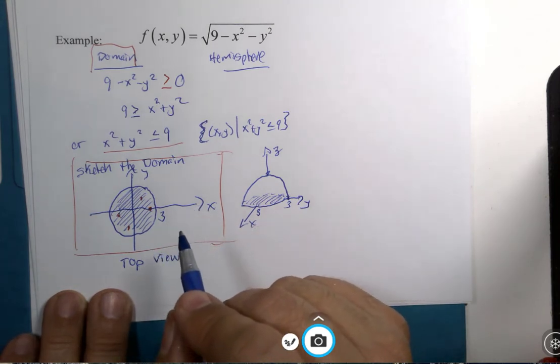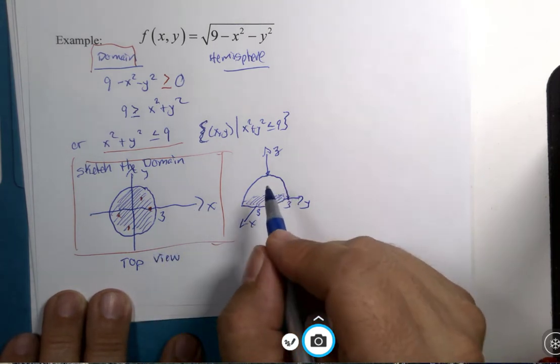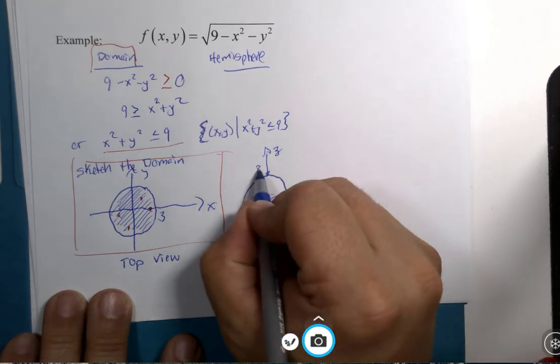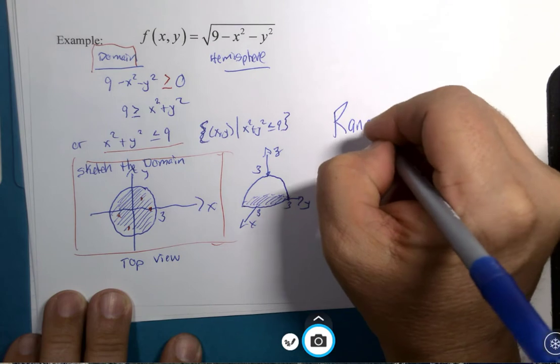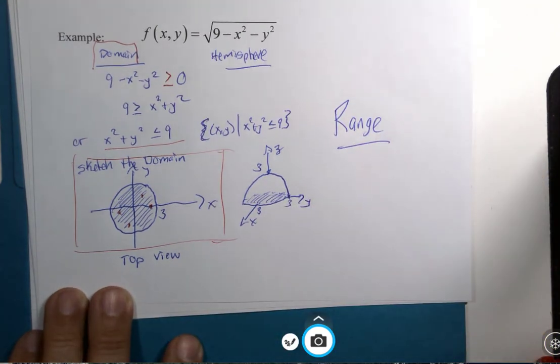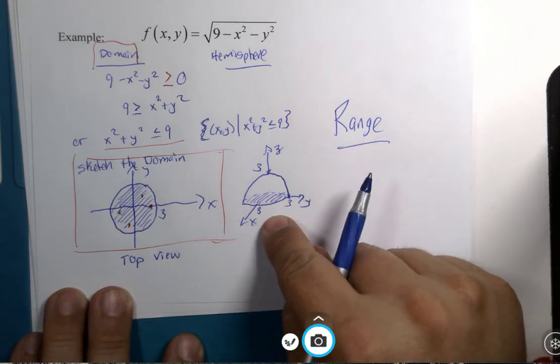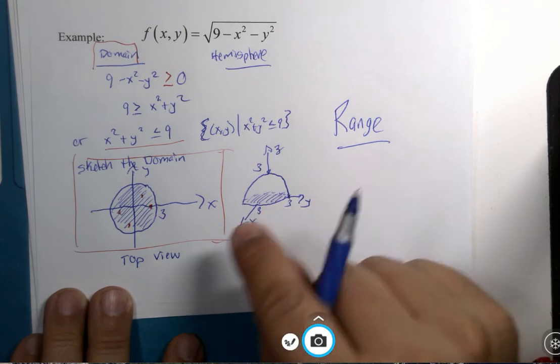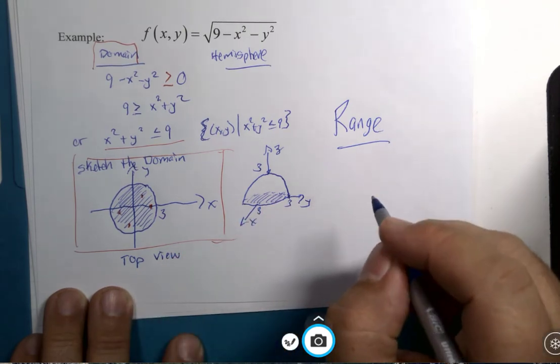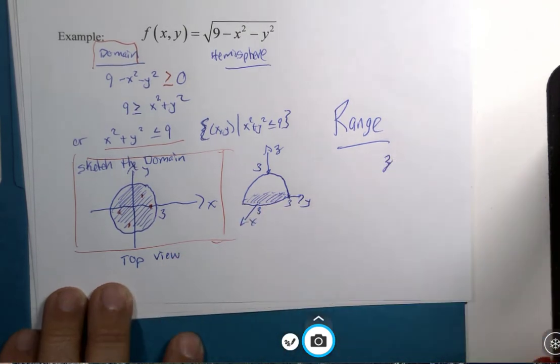This top view of the xy plane shows me kind of the foundation for the building. This three-dimensional view is going to answer my question about the range.